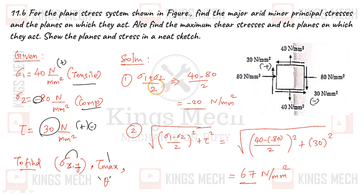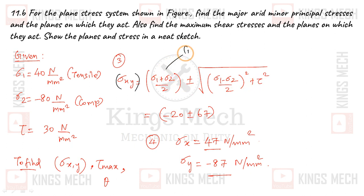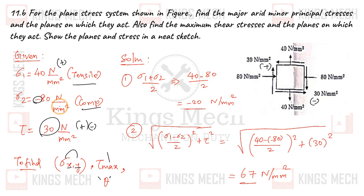First step: sigma_xy is equal to (sigma 1 plus sigma 2) divided by 2, plus or minus the square root of ((sigma 1 minus sigma 2) divided by 2) squared plus tau squared. That is the formula. We calculate (sigma 1 plus sigma 2) divided by 2 as (40 plus minus 80) divided by 2, which gives minus 20.